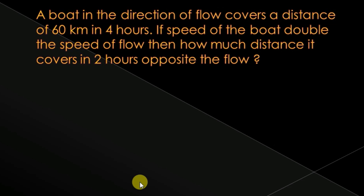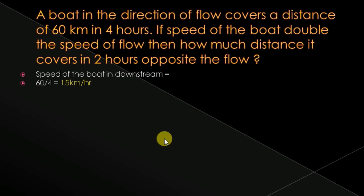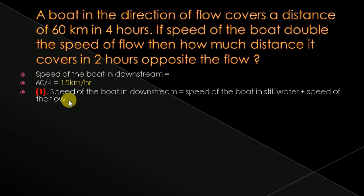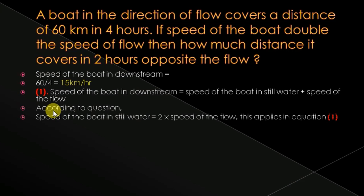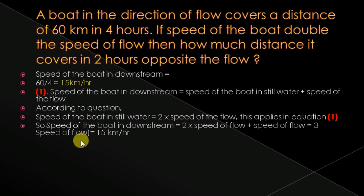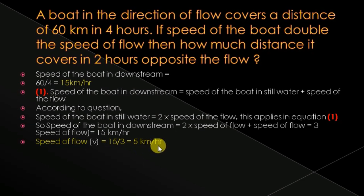Speed of boat downstream = 60/4 = 15 km/hr. Speed downstream = speed in still water + speed of flow (Equation 1). According to the question, speed of boat in still water = 2 × speed of flow. Applying this in Equation 1: 15 = 2v + v = 3v. Therefore speed of flow v = 15/3 = 5 km/hr.